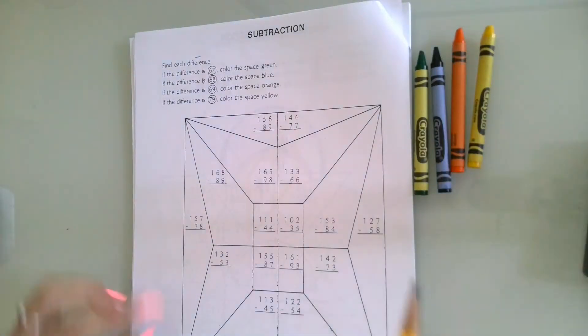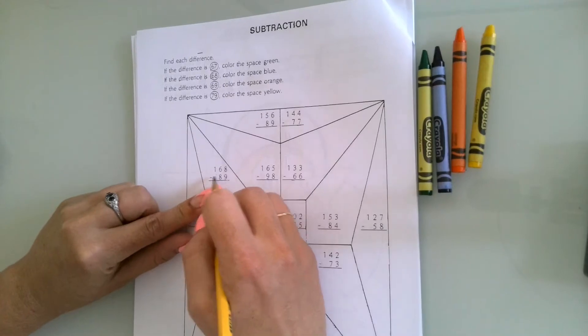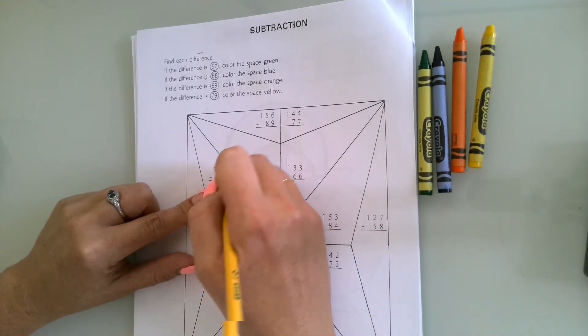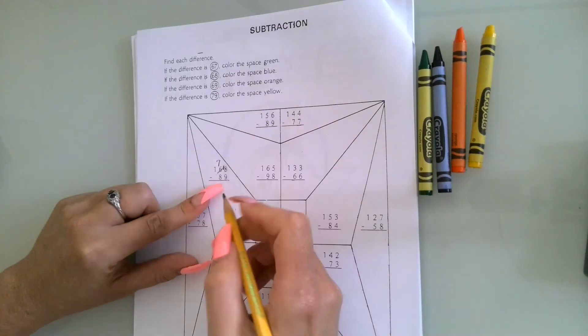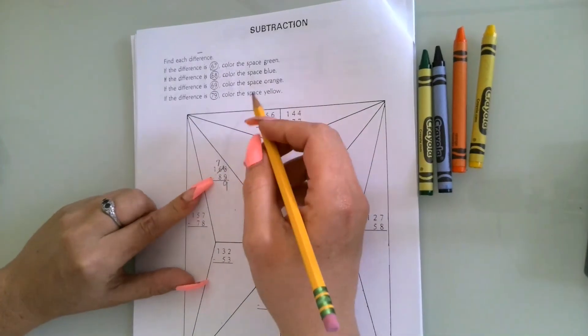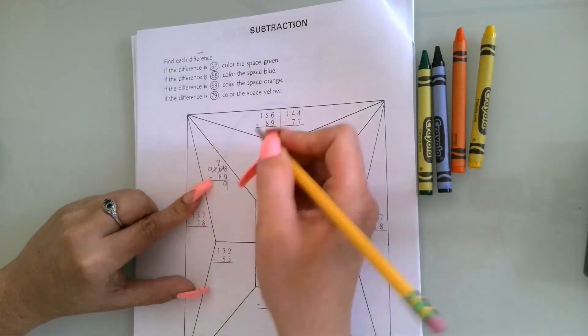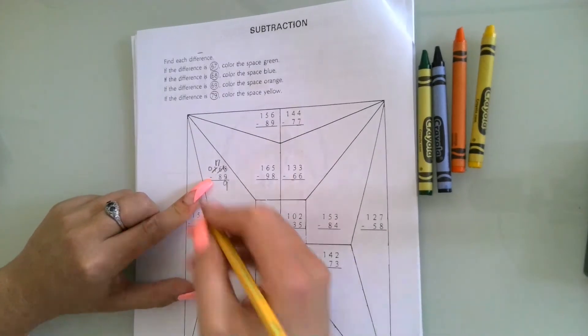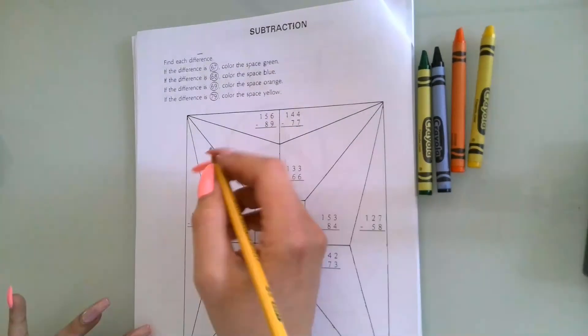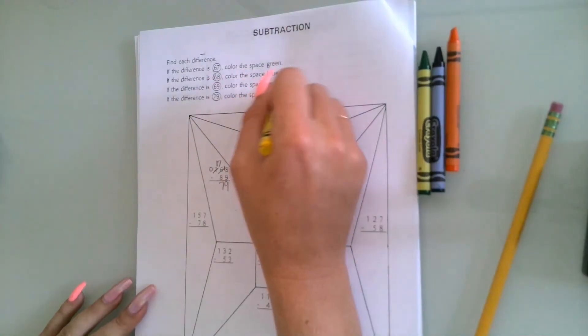I'm going to come here to this quadrilateral that looks like a kite. It says 168 minus 89. 8 minus 9, that top number is lower than the bottom number, so I have to borrow. That 6 now becomes a 7, 8 becomes 18. 18 minus 9 is 9 because 9 and 9 are doubles of 18. 7 minus 8, can't do that, so I have to borrow from the hundreds place. The 1 becomes a 0, my 7 now becomes 17. 17 minus 8 is 9. Very good.